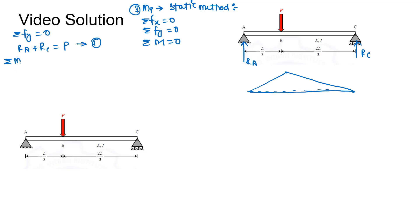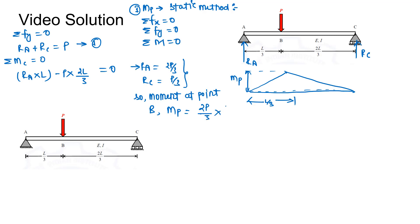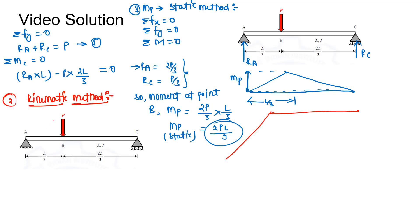Using summation Fy = 0: Ra + Rc = P (equation 1). Taking moment about point C = 0: Ra × L − P × 2L/3 = 0, giving Ra = 2P/3 and Rc = P/3. The moment at point B is the plastic moment mp = Ra × L/3 = (2P/3) × (L/3) = 2PL/9. This is our mp static.